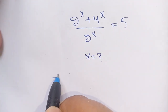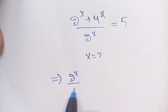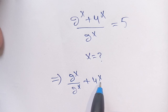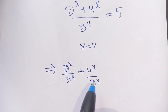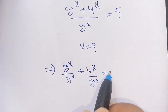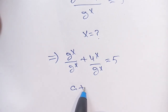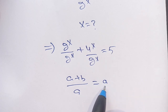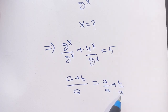We can write it as 2^x divided by 2^x plus 4^x divided by 2^x is equal to 5. As we know that (a + b) divided by a can be written as a divided by a plus b divided by a.